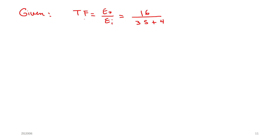Given the transfer function of a first order system — clearly it's an electrical system — E_out over E_i = 16 over (3S + 4). This is the transfer function given. Is this first order or second order? It's a first order system. How do we know? Check the power of the denominator — it's to the power 1, so this is a first order system.